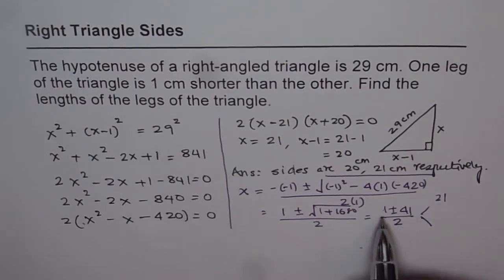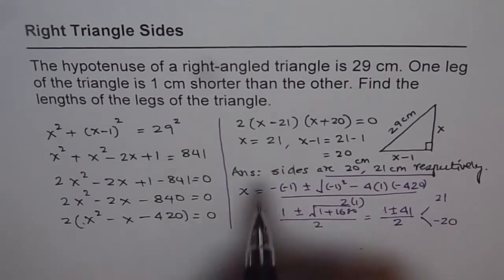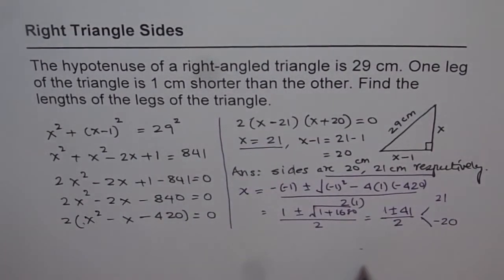And the other one is, 1 minus 41, which is minus 40 and 40 divided by 2 is minus 20. That is with the negative sign. So we get the same answer as we got earlier. So you could use any of these two methods to get your answer.